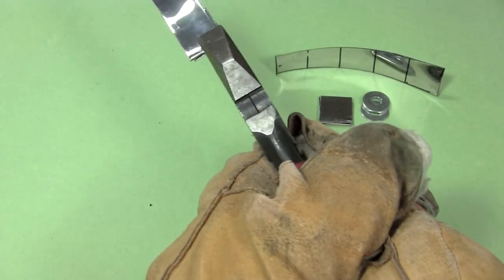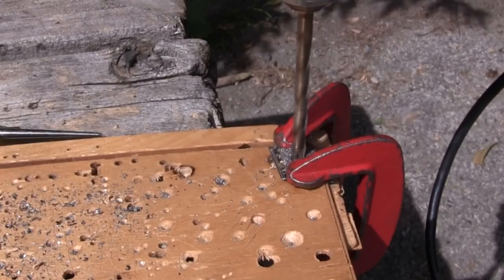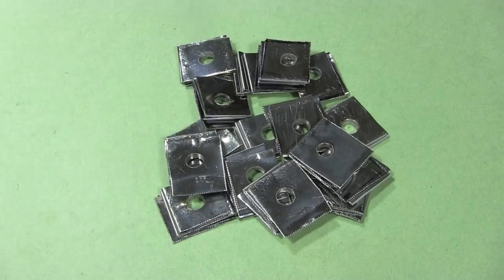and bend and flatten them to make spacers. I make sure they're the same thickness as the washers. I then drill a hole in each of them. And here are the finished spacers.